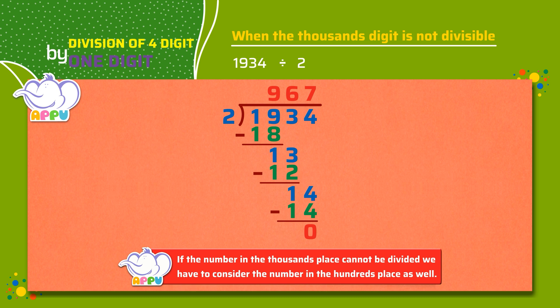We stop division, because zero is less than two. So nine hundred sixty-seven is the quotient, and zero is the remainder. Perfect!